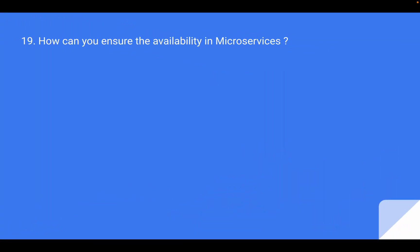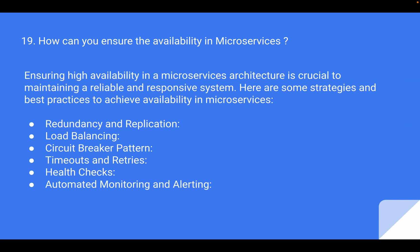Moving to the next question, the interviewer asked: how can you ensure availability in microservices? Ensuring high availability in a microservices-based architecture is crucial to maintain a reliable and responsive system. Here are some strategies and best practices. The first is redundancy and replication — deploying multiple instances of each microservice across different servers and containers to ensure redundancy and fault tolerance. Then there is load balancing — distributing incoming requests across multiple instances of microservices using a load balancer. Then there is the circuit breaker pattern — implementing it to handle failures gracefully. The circuit breaker monitors the health of microservices and, if it detects failures, can open the circuit and direct traffic away from the failing service, reducing the risk of cascading failures.